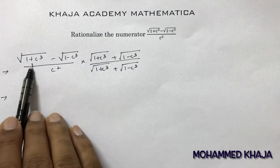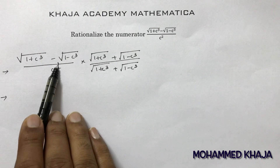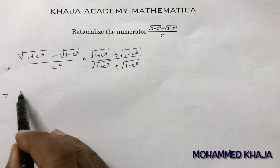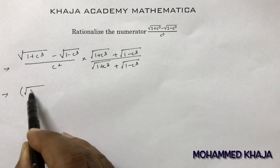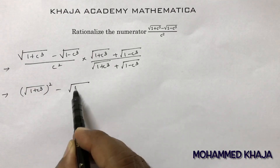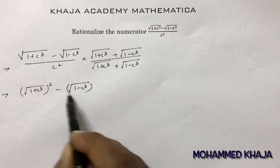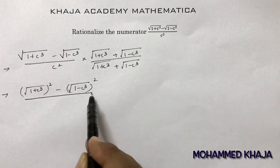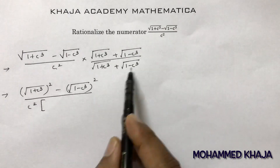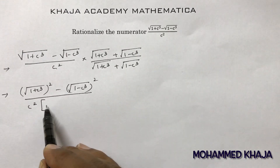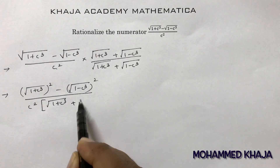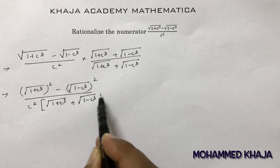The numerator is now in the form of (a - b)(a + b), which equals a² minus b². So the numerator becomes (1 + c³) minus (1 - c³), divided by c² times root(1 + c³) plus root(1 - c³).